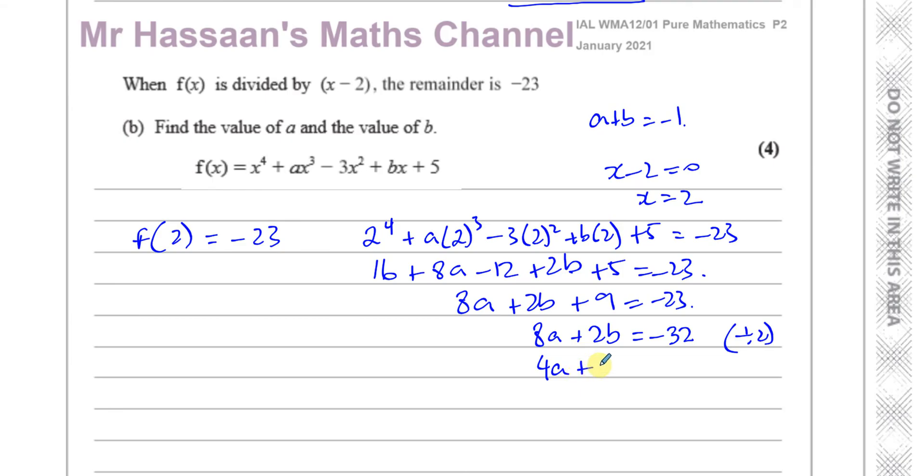I've got 4a + b = -16. And now I have two equations. One equation from the first is a + b = -1, that's one equation. And the second equation is 4a + b = -16.